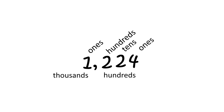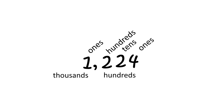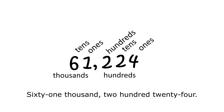The correct way to read this number is 1,224. If we add a number 6 to this set of numbers, the number 6 is in the 10s value of the 1000 section — or we can say the 10,000 value. So now we have 61,224.